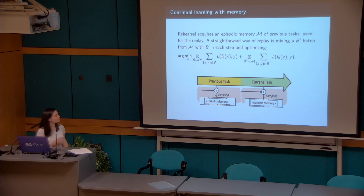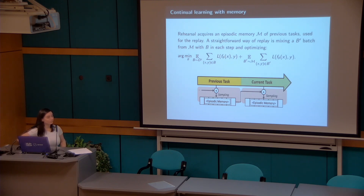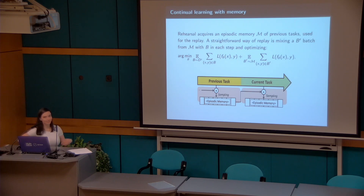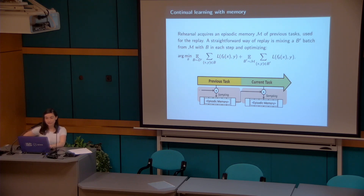I'm focusing now on learning with memory. In memory-based methods, we have access to episodic memory where we can store training examples from previous tasks. The straightforward approach is to sample batches from memory and mix them with the current task's data, optimizing the risk on both. When learning the current task, we must decide what to store in memory from the current dataset, because the memory is not infinite. If we stored all data that would be the basic solution to continual learning, so we have to cleverly select what to keep.